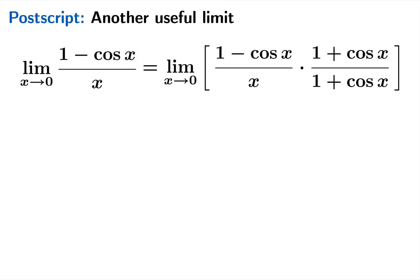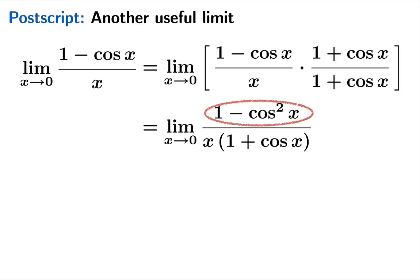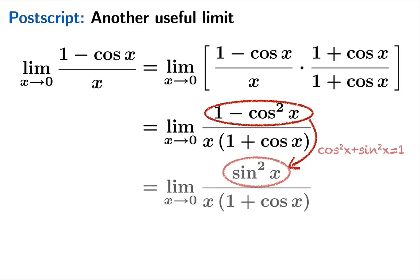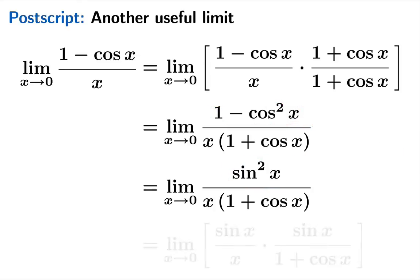But you'll notice that the numerator is one minus cosine squared x. And we can use the Pythagorean formula to rewrite that as sine squared x. And now you can see perhaps why we multiplied numerator and denominator by one plus cosine x in the first place, because we can pull apart the limit into the product of these two terms.